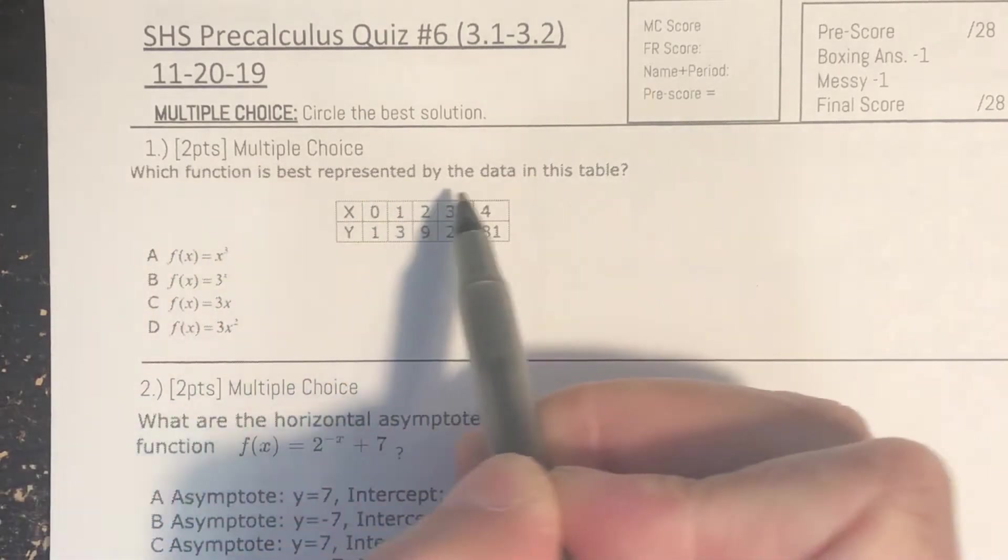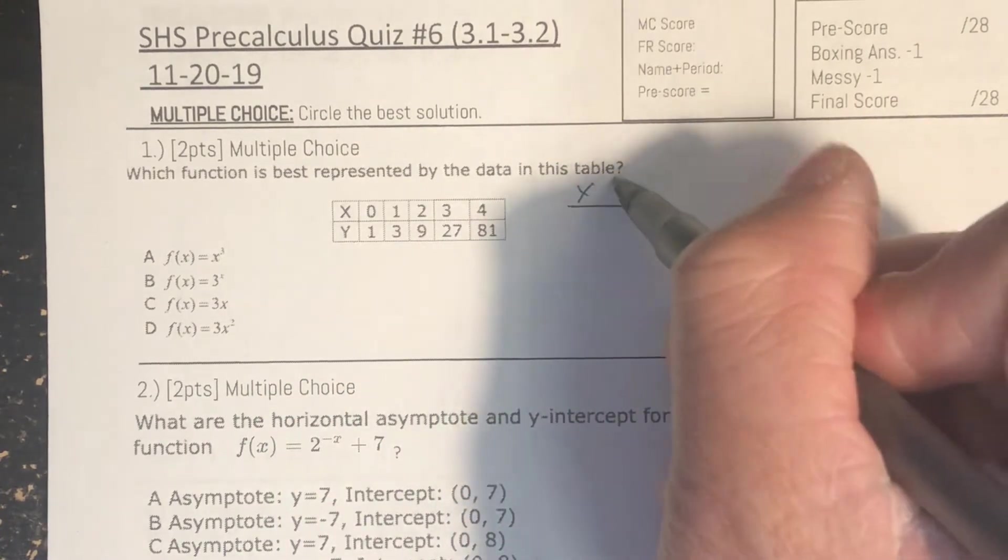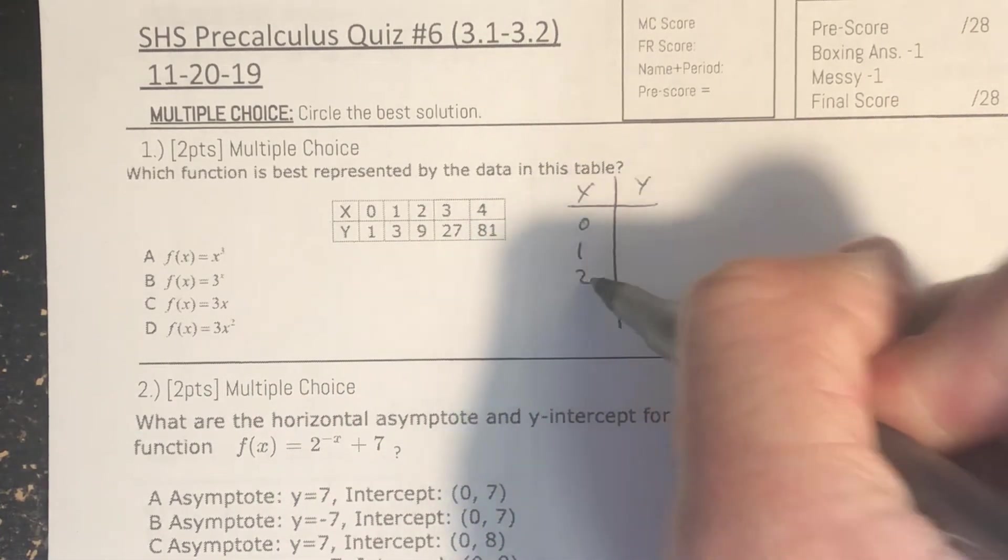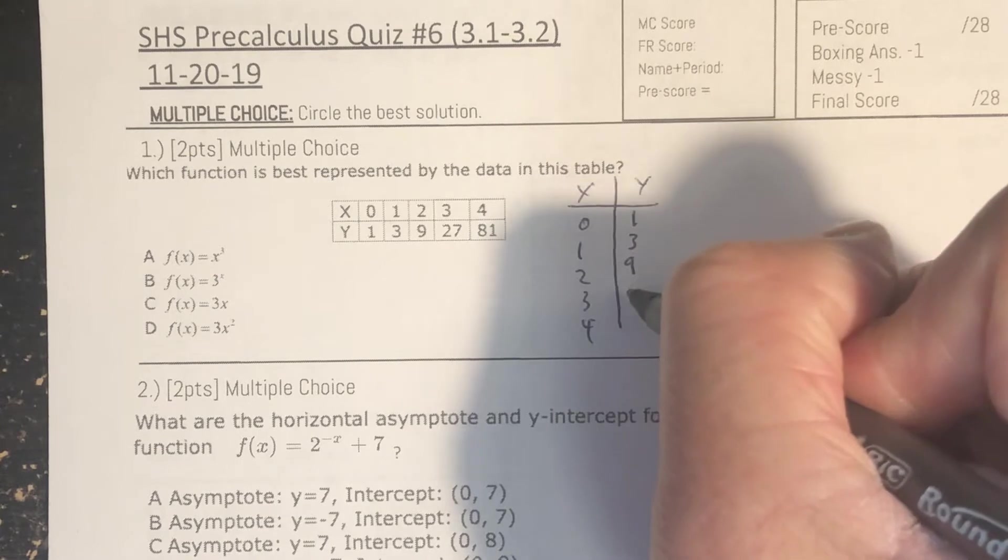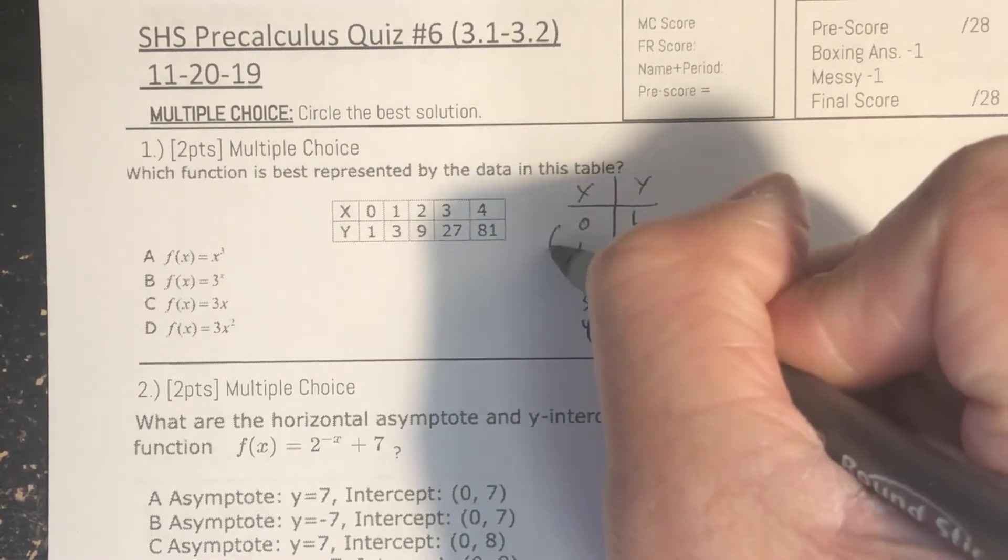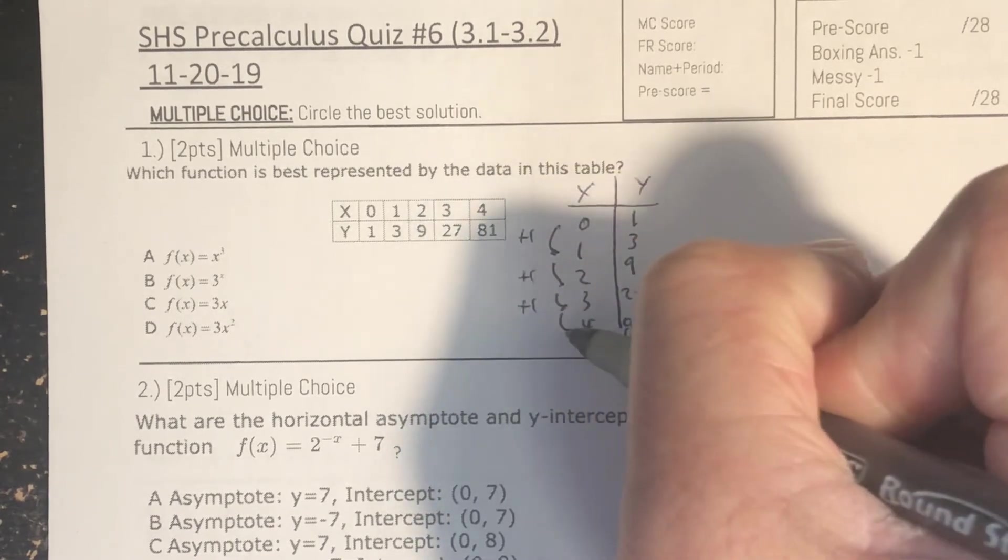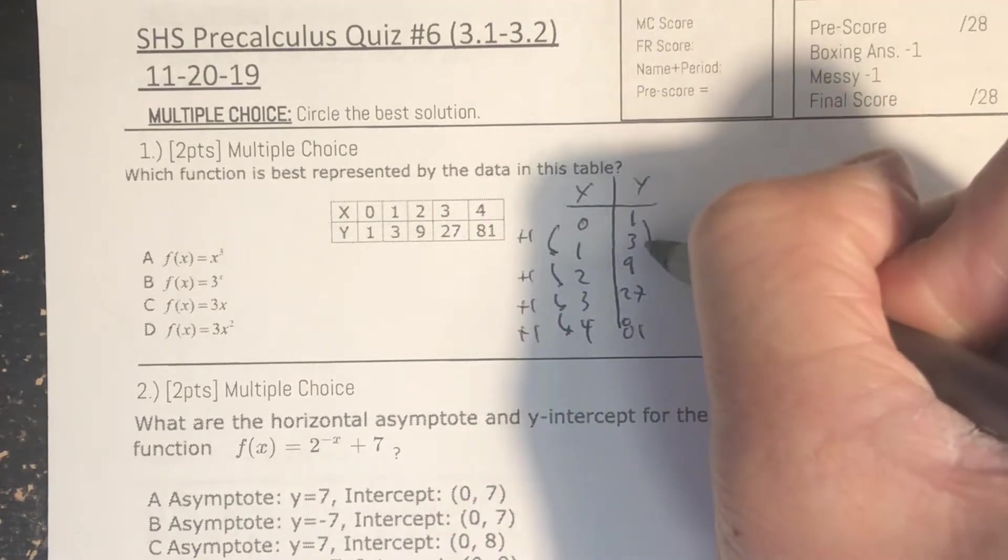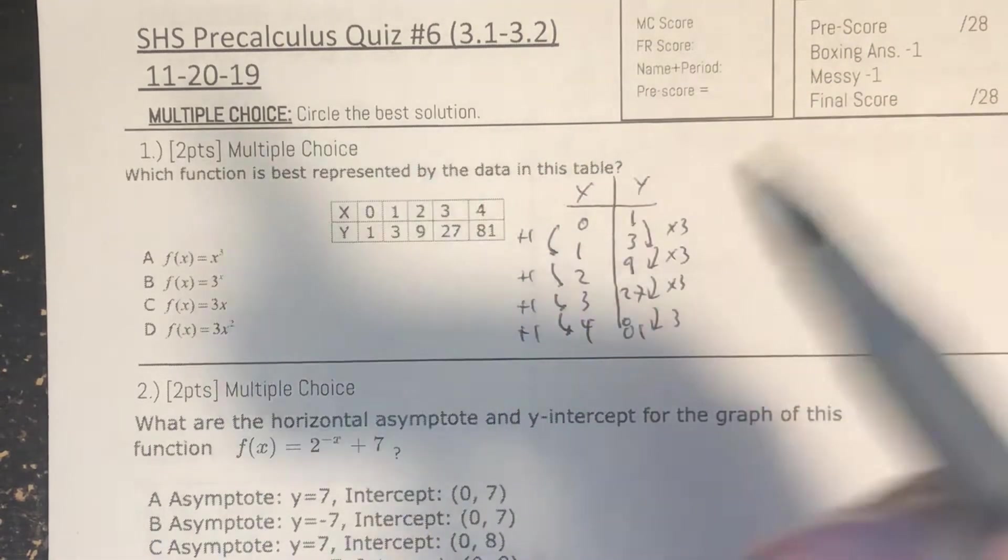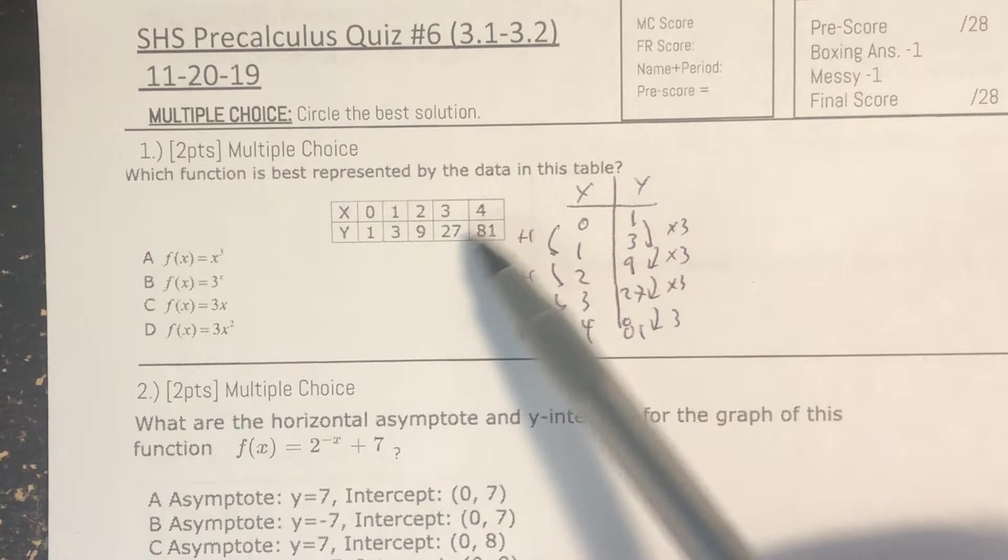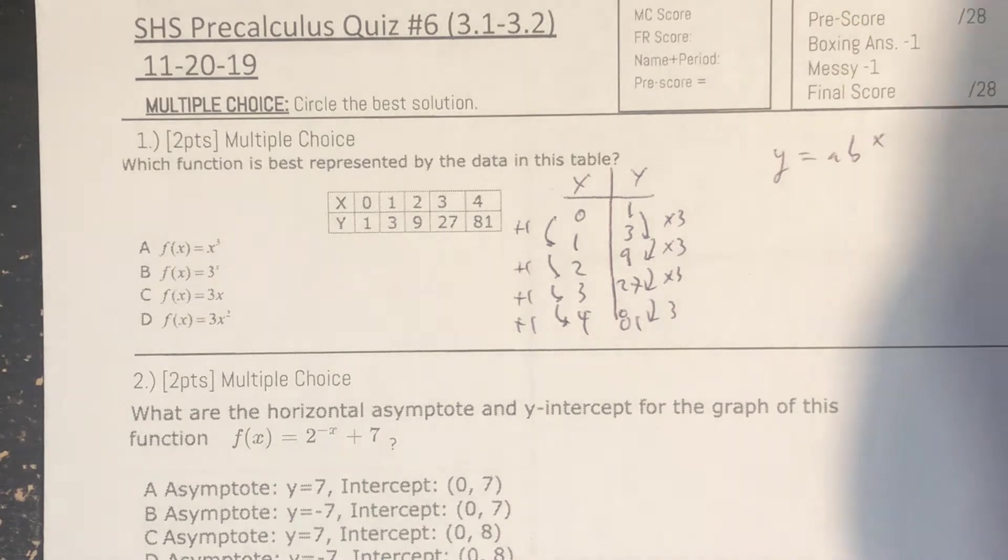Question number 1: Which function is represented by the data in the table? If you ever need to, take the horizontal and make it a vertical if that makes you feel more comfortable. If you notice the x values are adding by 1.